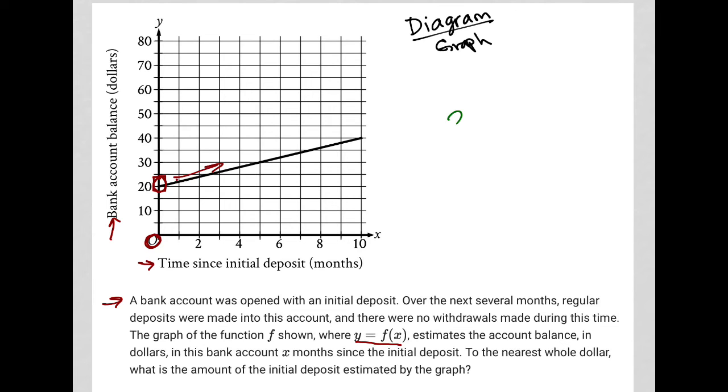Well, we already figured that out, right? So the answer is 20 because that is the y-intercept. It represents the initial deposit. We know that it's the initial deposit because no time, zero time has passed since the initial deposit, which means that that was the initial deposit, $20.